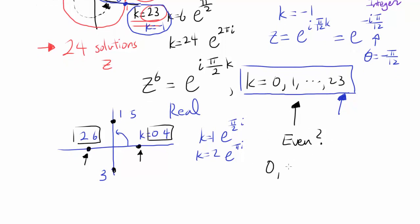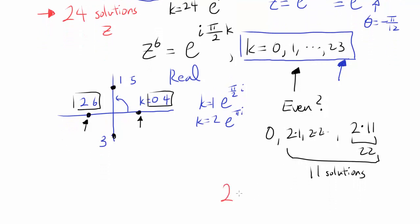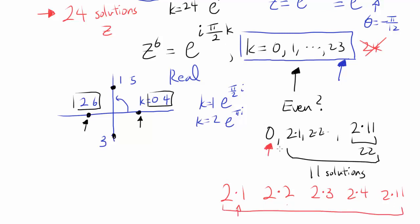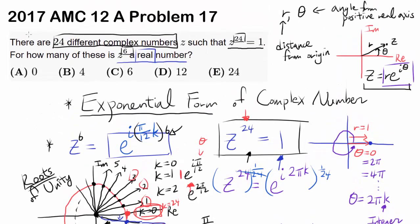The even values of k from 0 to 23 are: 0, 2, 4, ..., 22. That's 2×0 through 2×11, giving 12 even values. So there are 12 different values of k, meaning 12 complex numbers Z for which Z^6 is a real number. The answer is 12.